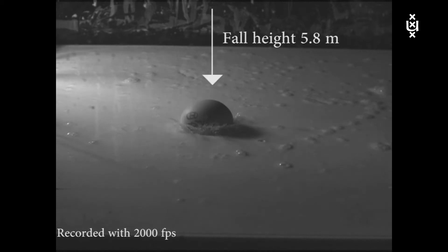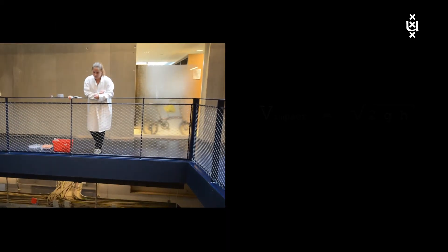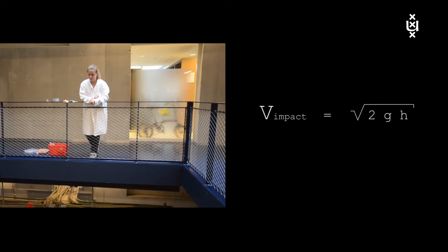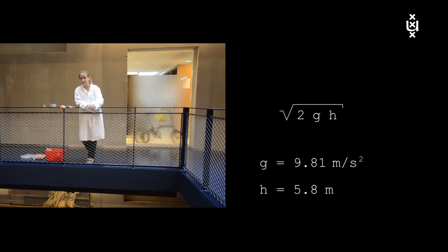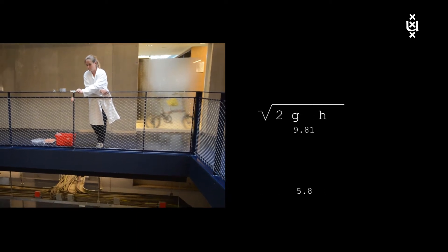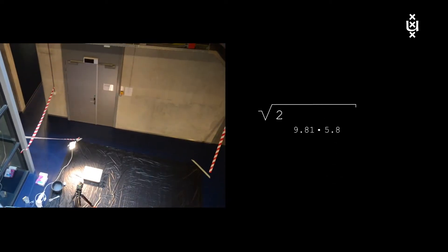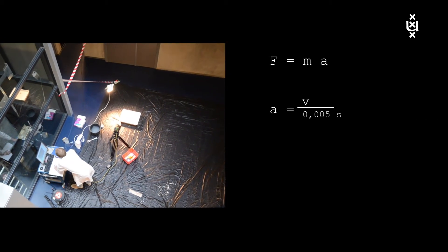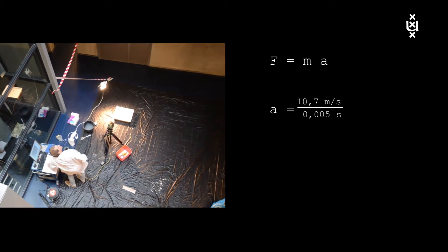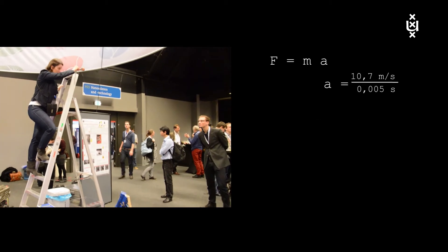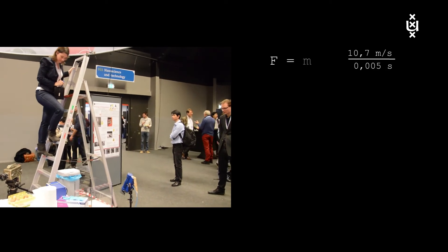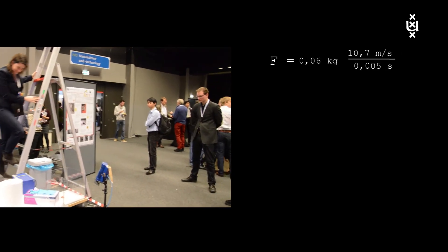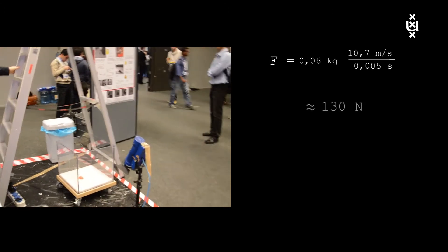The egg falls from 5.8 meters onto the liquid and it stops within 0.53 centimeters in 5 milliseconds. We calculated the velocity of the egg prior to impact by means of equating it to the square root of 2 times the acceleration of gravity and the height which equals 10.7 meters per second. The egg stops within 5 milliseconds from which we can determine the deceleration rate by dividing the velocity by the time, multiplying with the mass of the egg which is 60 grams. This gives us a force exerted onto the egg of 130 newtons.